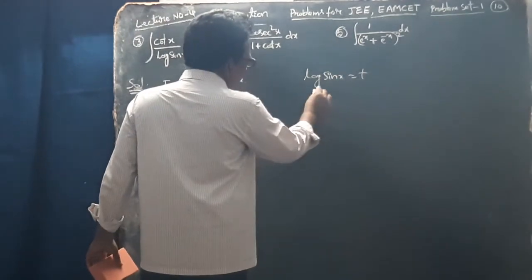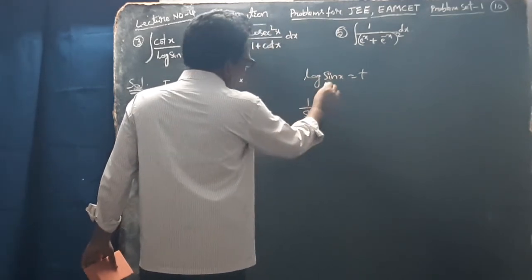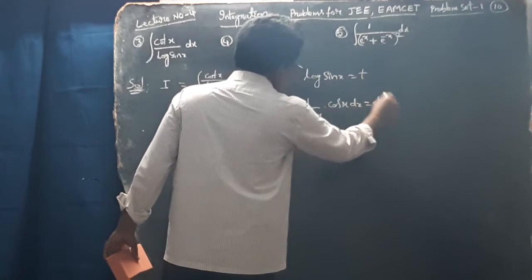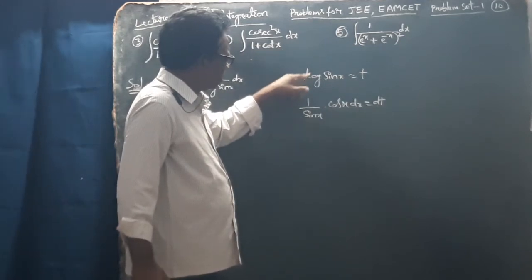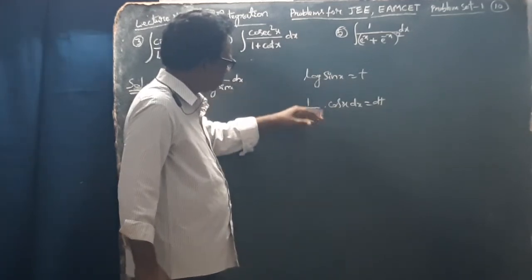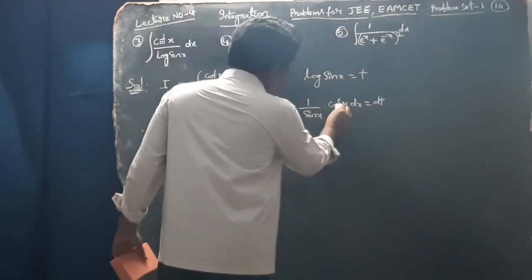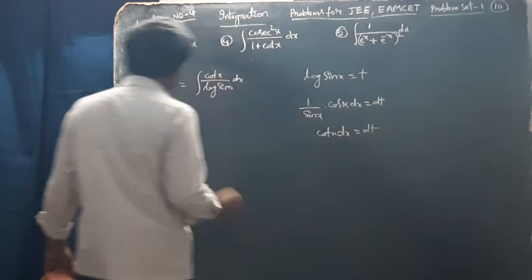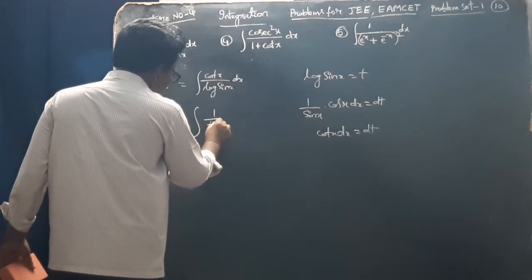Differentiating log sin x: 1 by sin x into cos x dx equals dt. So cos x by sin x is cot x, therefore cot x dx equals dt. This is equal to integral of cot x dx, which becomes 1 by t dt.